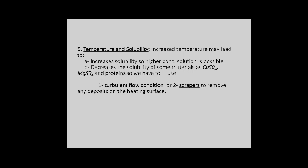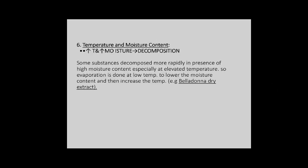However, temperature may decrease the solubility of some materials like calcium sulfate, magnesium sulfate, or even proteins. A turbulent flow condition or scrubber is used to remove any deposits on the surface of the heating device.